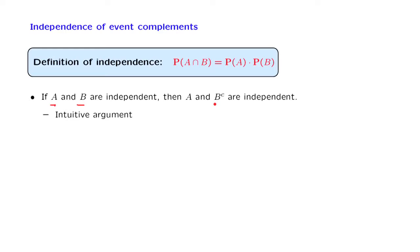In other words, the occurrence of A tells you nothing about B, and therefore tells you nothing about B complement either. This was an intuitive argument that if A and B are independent, then A and B complement are also independent.